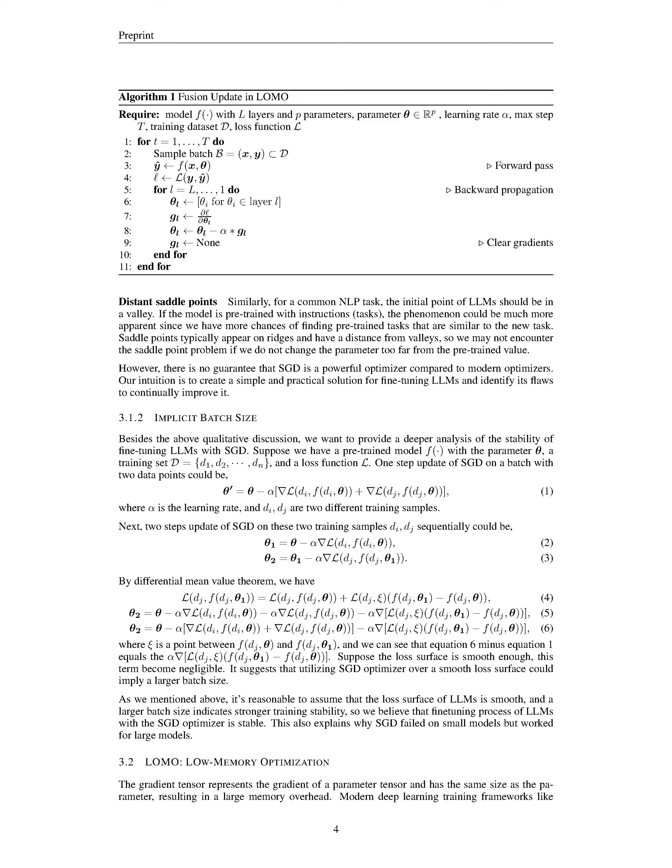This can provide an explanation as to why SGD tends to fail on smaller models but succeeds with larger ones. The analysis showed that utilizing the SGD optimizer over a smooth loss surface could imply a larger batch size, which indicates stronger training stability. Therefore, the fine-tuning process of LLMs with the SGD optimizer is stable, and this explains why SGD failed on small models but worked for large models.